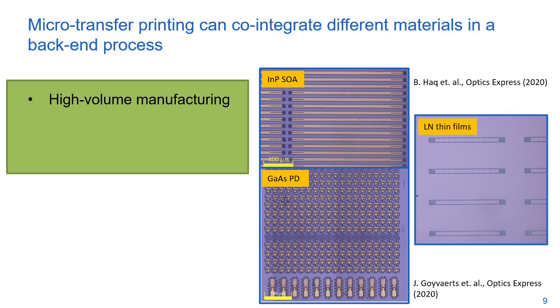Because multiple source wafers can be brought together on one target wafer, it allows different materials to be densely co-integrated in the same photonic integrated circuit in a real back-end compatible process. This makes efficient use of material, as you can see from the figures to the right.